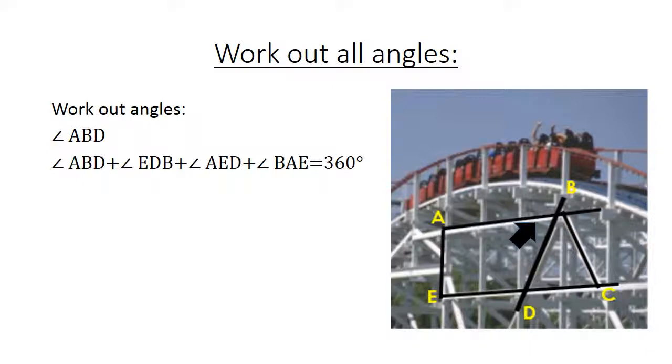Angle ABD plus angle EDB plus angle AED plus angle BAE equals 360 degrees. The reason, the sum of the interior angles of a polygon.